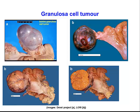Granulosa and thecal cell tumours are occasionally seen in cattle. You will pick these up as either solid masses or multi-cystic structures.